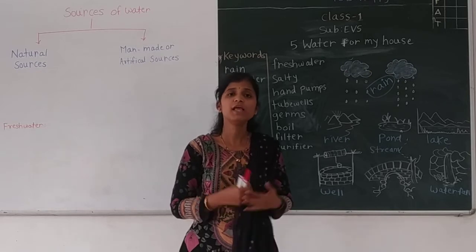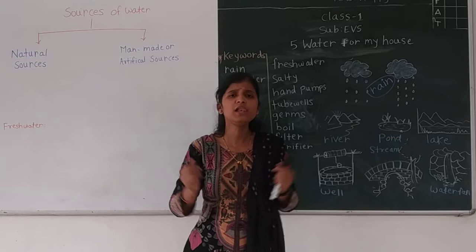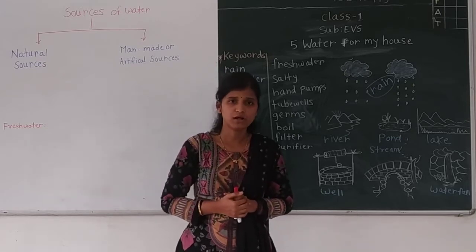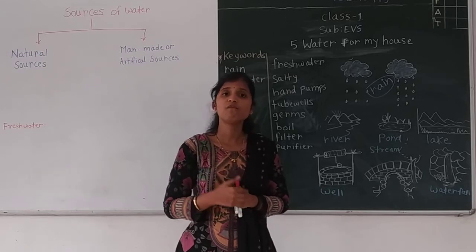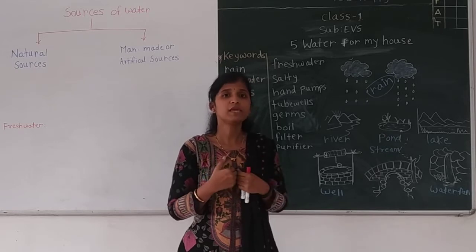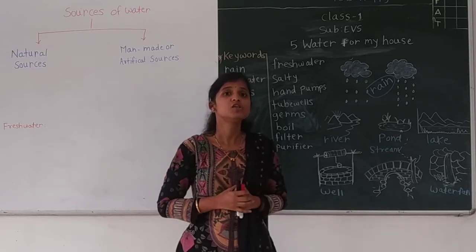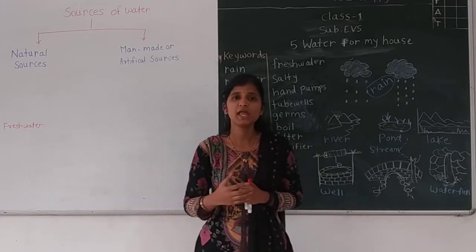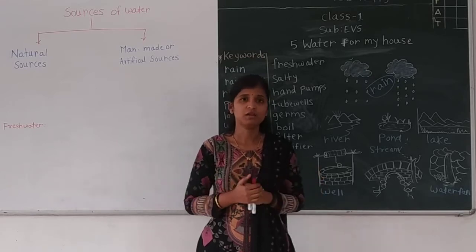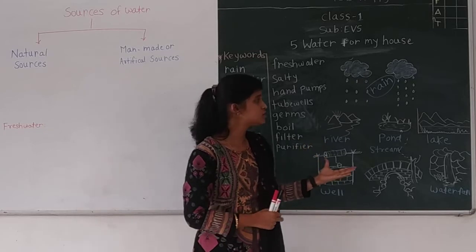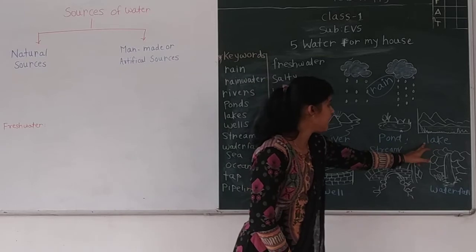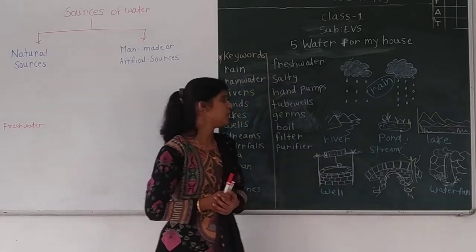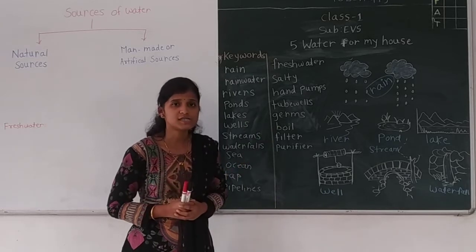In the last Section Number 1, we studied that all living things need food and water to live. We drink water every day, and the water comes from rain. Rain is the main source of water, and rain water goes into rivers, ponds, lakes, streams. We also studied some new words — sea words.